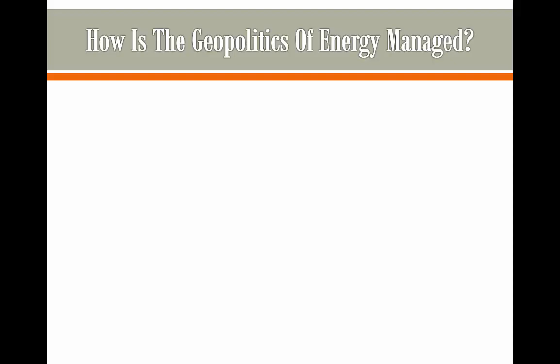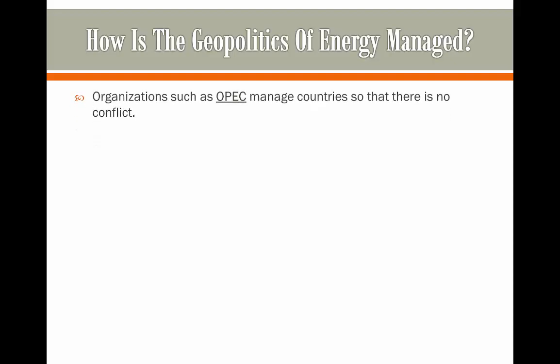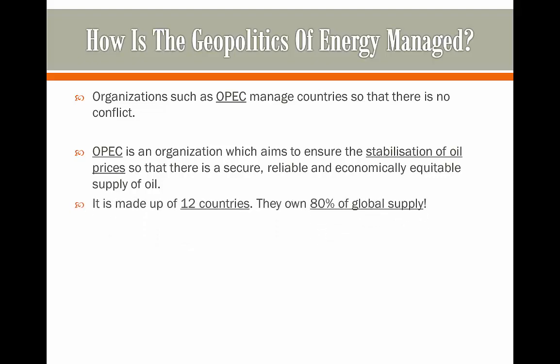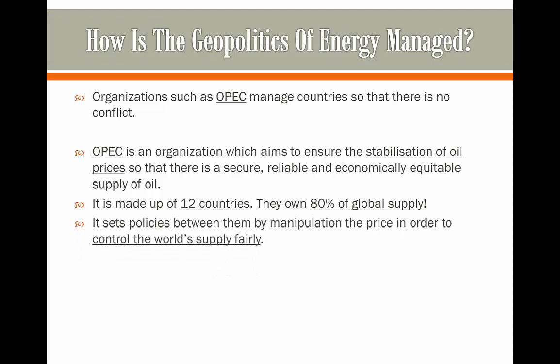So, how is the geopolitics of energy managed? Well, we can have organisations set up such as OPEC, which can manage countries so there's no conflict. OPEC is an organisation which aims to ensure the stabilisation of oil prices so that there is a secure, reliable, and economically equitable supply of oil. It's made up of 12 countries and they own 80% of the global supply. It sets policies between them so that the manipulation of the price in order to control the world's supply fairly can actually happen.